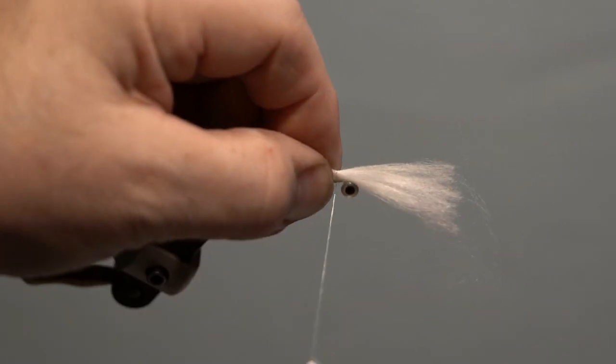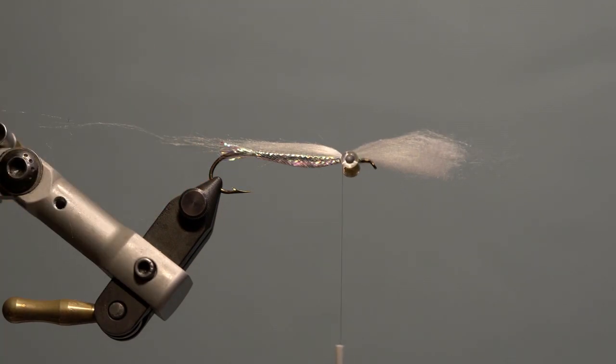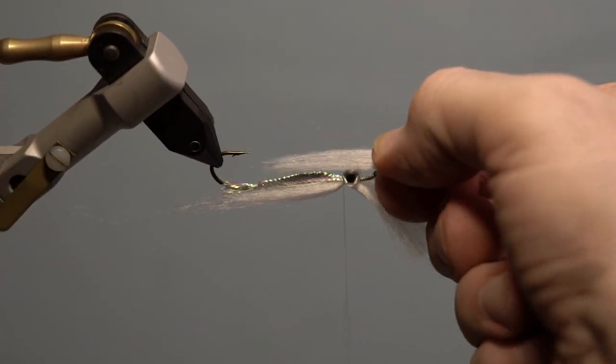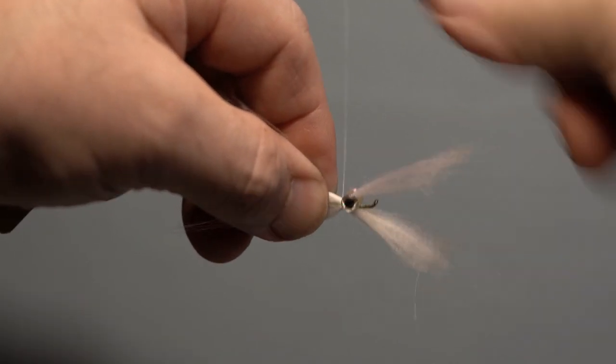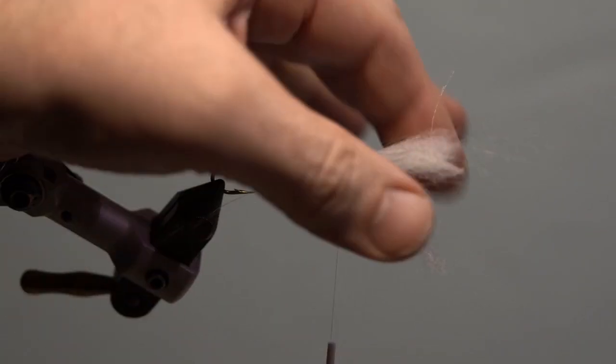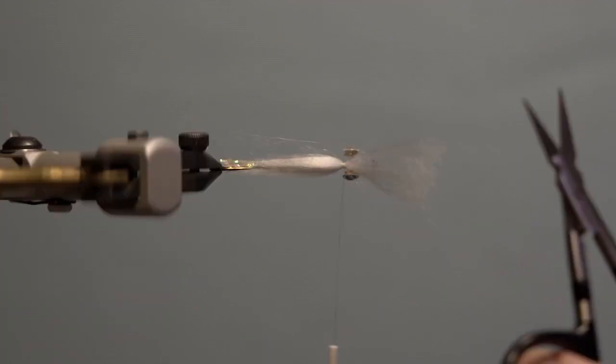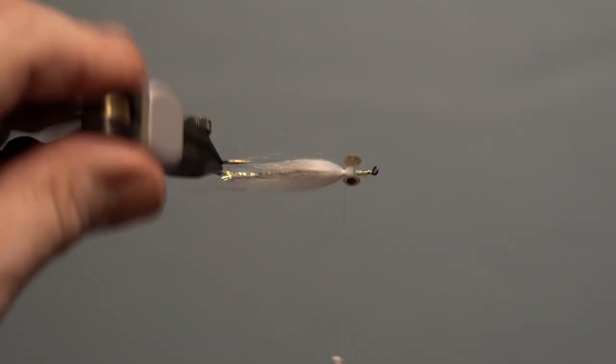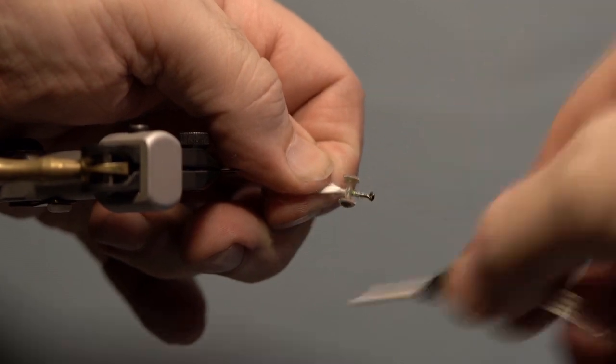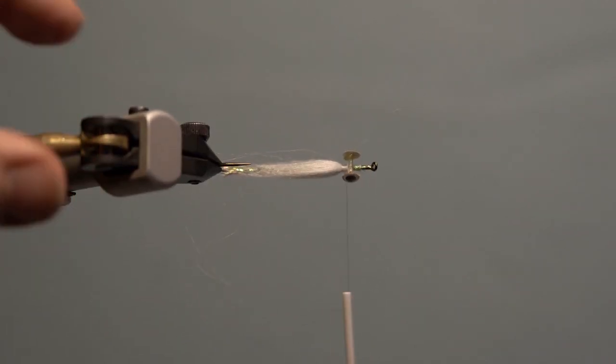Next, add the first portion of the polar fiber for the wing behind the eye. The tips are even with the bend. Tie in the second portion of the wing underneath the hook behind the eyes to the hook point and secure. Trim off any excess on both wings flush with the eyes and secure. Add head cement.